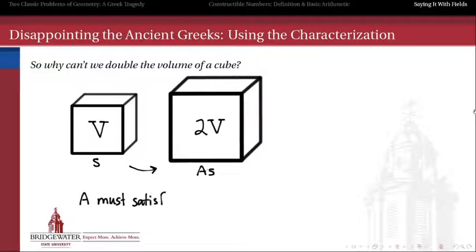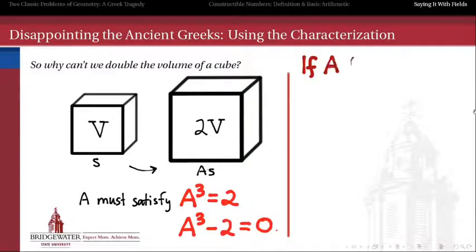Well, if we assume that s is the side length of our original cube, then whatever we scale that up by, a times s, so a is our scale factor here, but that number a has to satisfy a cubed is equal to 2. So that when we multiply it by itself 3 times, as times as times as is going to be 2s cubed, which is equal to 2 times v.